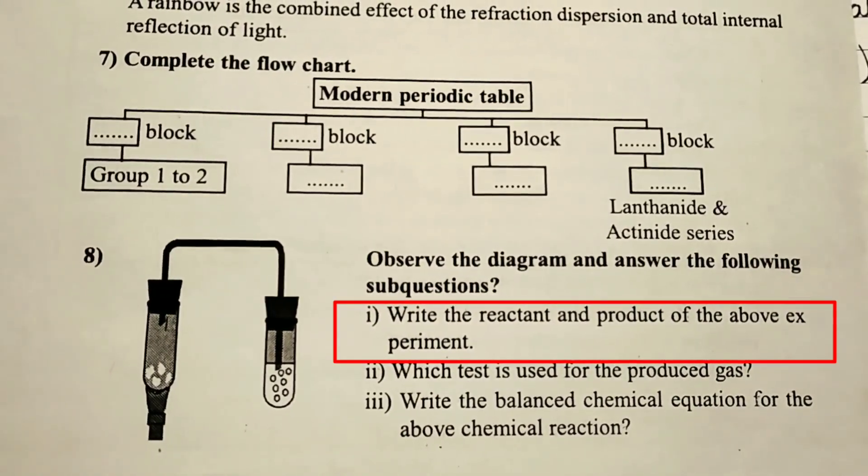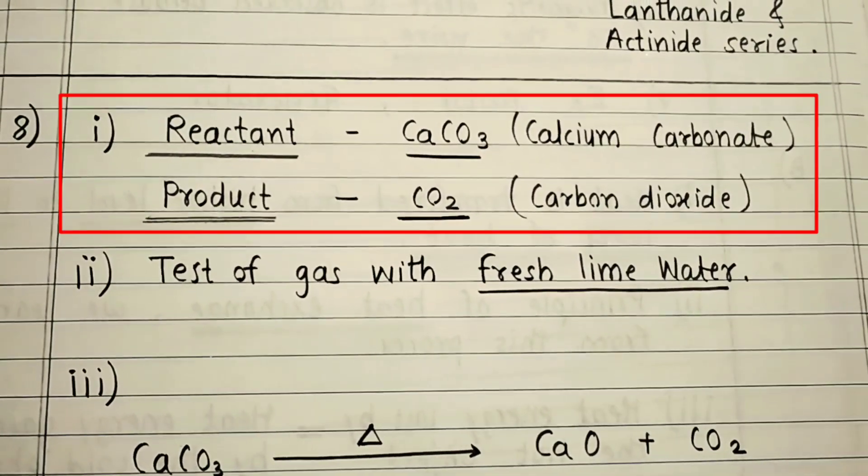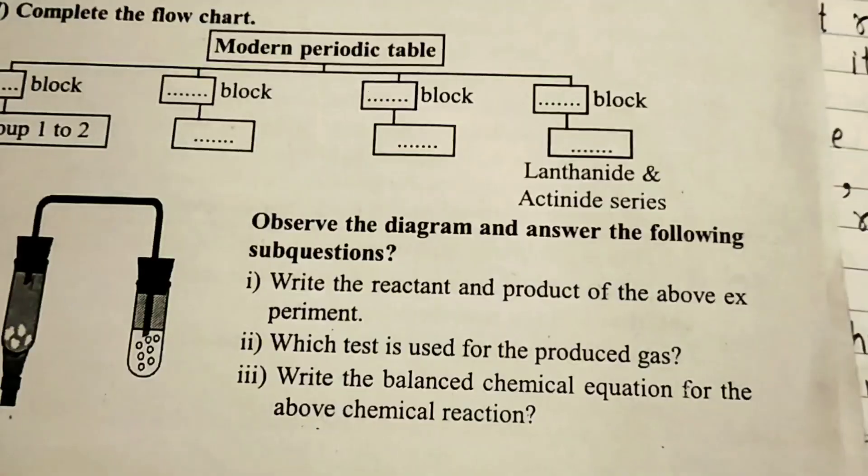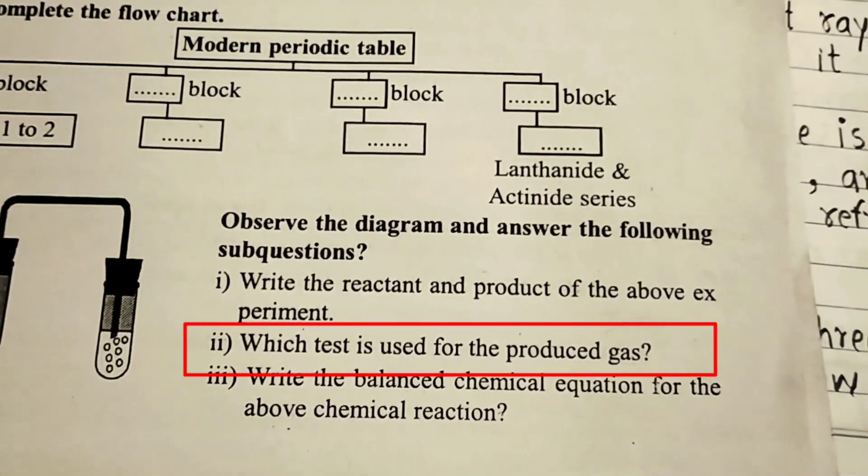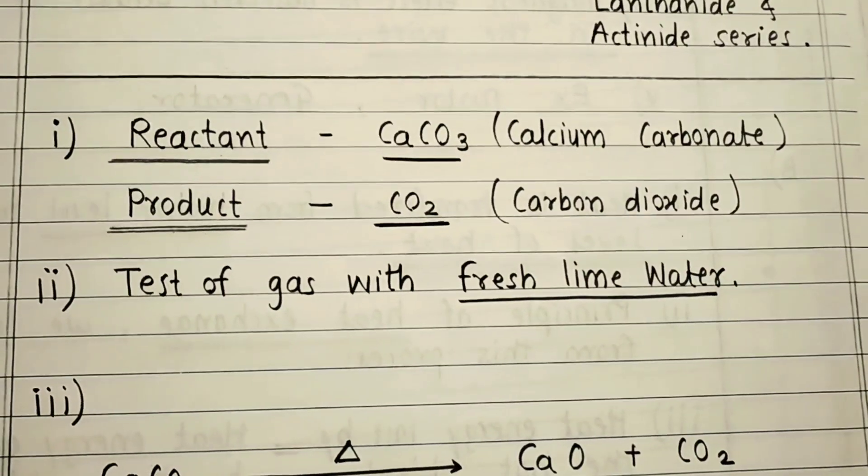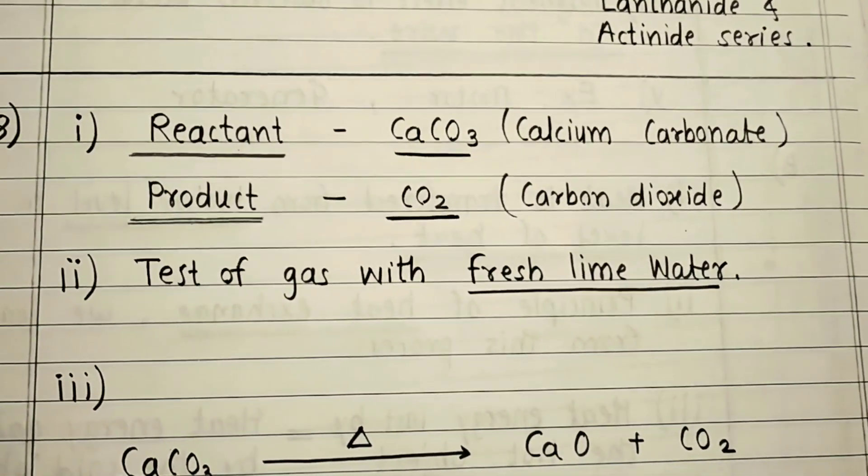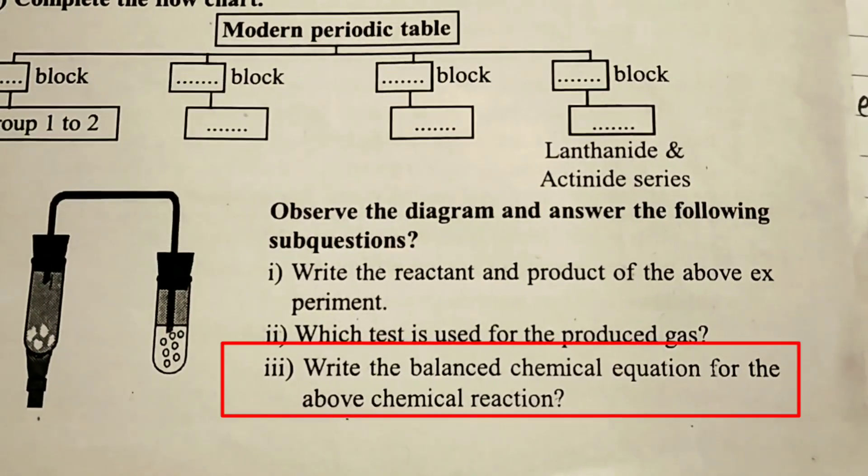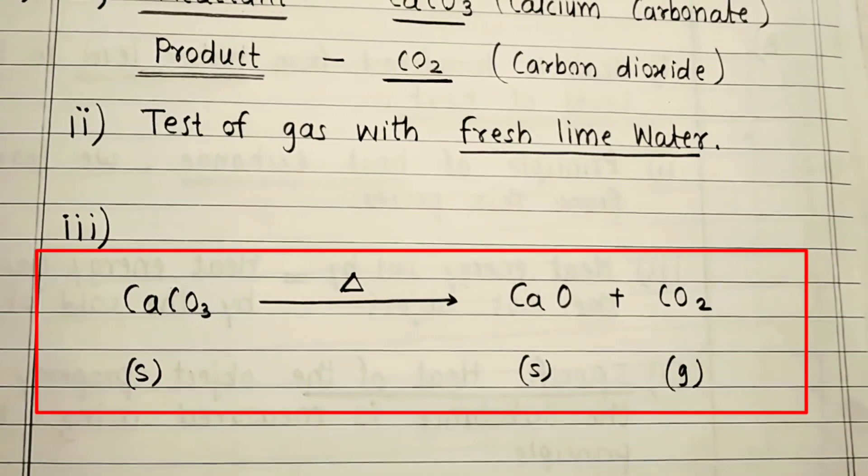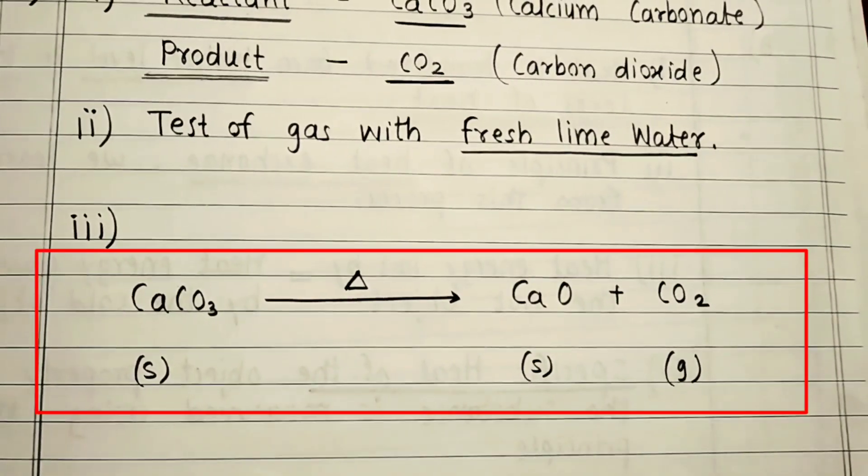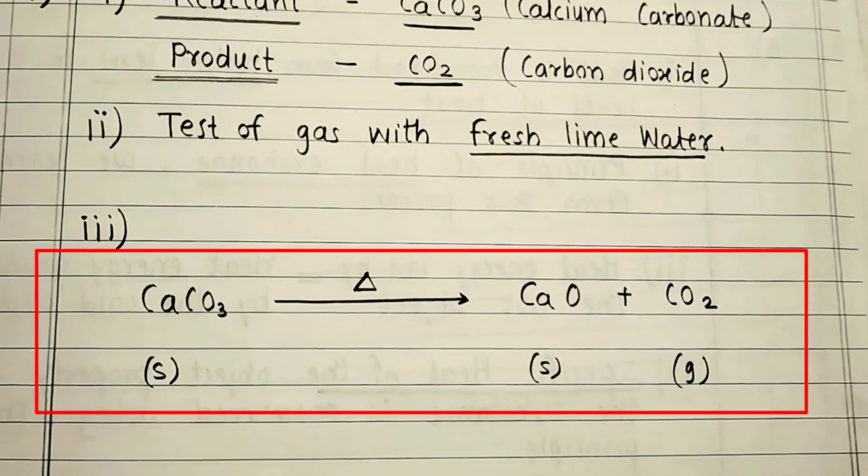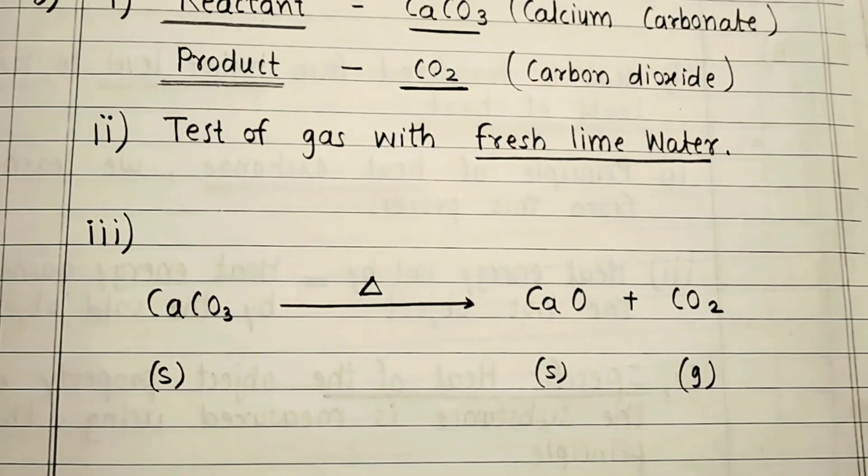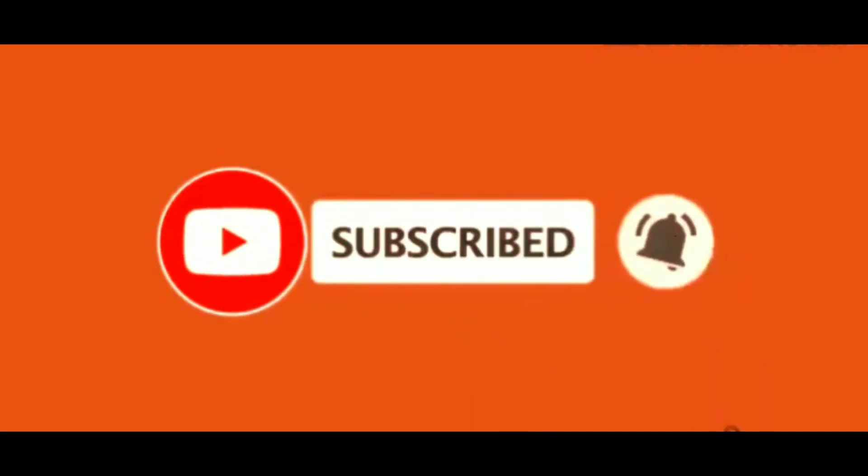Question 8: Observe the diagram and answer the following sub-questions. Write the reactant and product of the above experiment. Reactant: calcium carbonate CaCO3. Product: CO2 carbon dioxide. Which test is used for the produced gas. Test of gas with fresh lime water. Write the balanced chemical equation for the above chemical reaction. CaCO3 solid with heat gives CaO Calcium oxide solid plus CO2 Carbon dioxide gas.